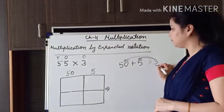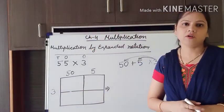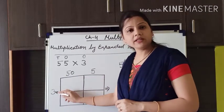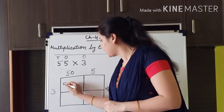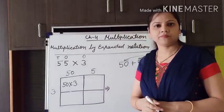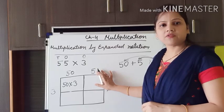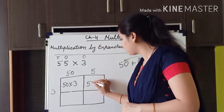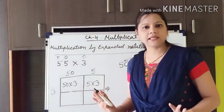Now this 3 we have to write at this place on the side. Now what we have to do: first we have to multiply 50 with 3, so we will write 50 multiplied by 3. Similarly, we also have to multiply 5 by 3, so we will write 5 multiplied by 3. Up to this it is clear — how we have to arrange the numbers for the expanded multiplication.